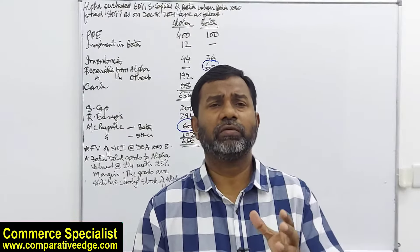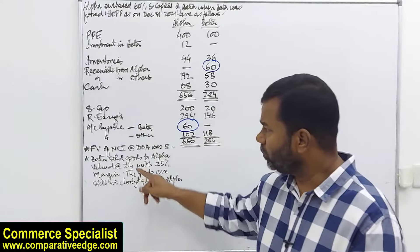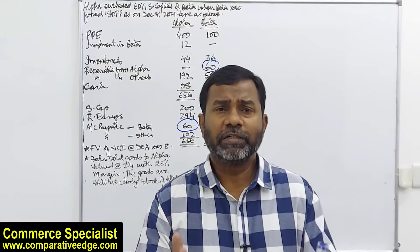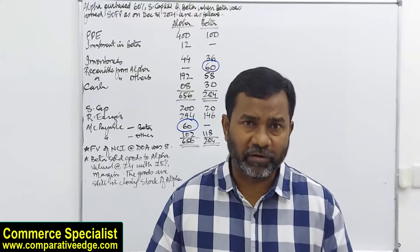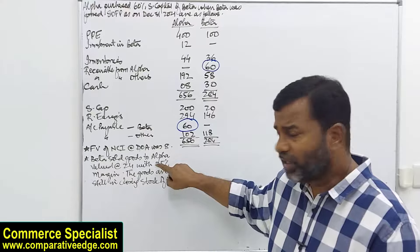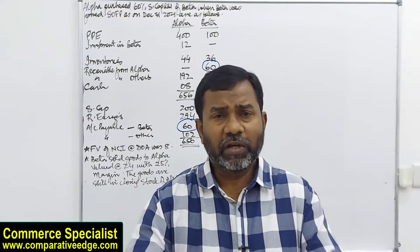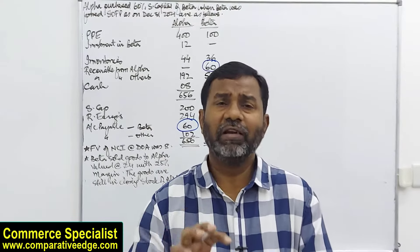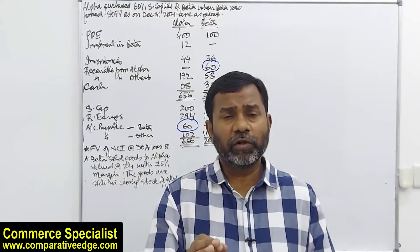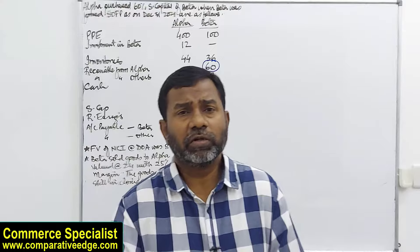Inventory is valued at lower of cost or net realizable value — we are being prudent. Beta sold goods to Alpha as intra-group trading: the value is 24,000 with a 25 percent margin. Group profits are what the group earns from outsiders, not from each other. Although Beta sold goods to Alpha for 24,000 including profit, since the goods are still in Alpha's closing stock, the group can only recognize profit once the goods are sold to outsiders. We must remove the unrealized profit from group reserves and from closing stock.